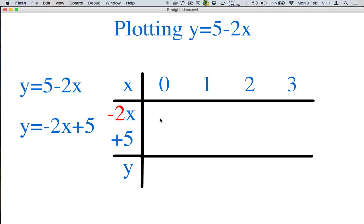Minus 2 times 0 is 0. Minus 2 times 1 is minus 2. Minus 2 times 2 is minus 4. Minus 2 times 3 is minus 6. Then again, we're going to take our plus 5s and write them in here.